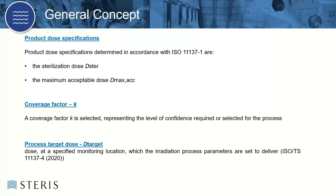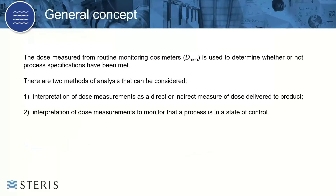The end result is the sterilization or minimum and maximum acceptable dose. Next, we'll look at coverage factors. Coverage factor, also represented by the letter K, represents the level of confidence that is required or selected. For example, K equals 2 is a 95% confidence level, also expressible as two standard deviations. Process target dose is the dose at a specified monitoring location which the irradiation process parameters are set to deliver. The dose measured from routine processing — the monitoring dose — is used to determine whether or not the process specifications have been met.